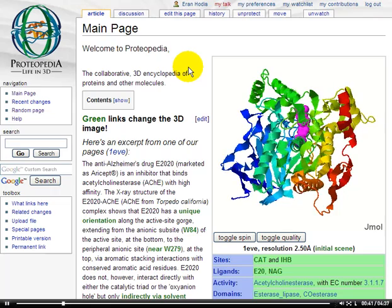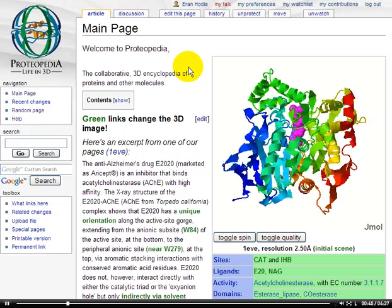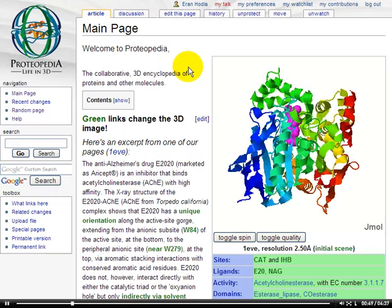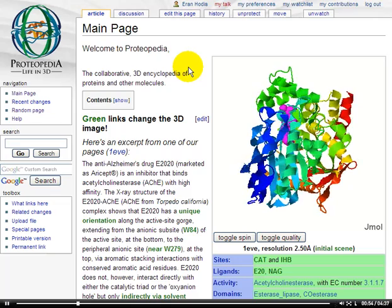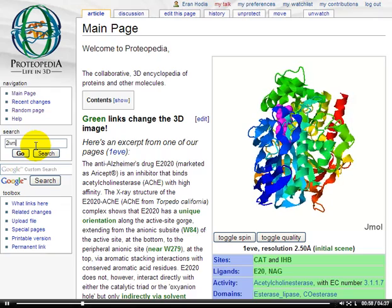But from what I just said, it sure sounded like all of these automatically created PDB entry pages in Proteopedia are stale and standard since they're automatically created. That's not at all the case, and let's take a look at one. We'll search for the PDB entry 2IVN.